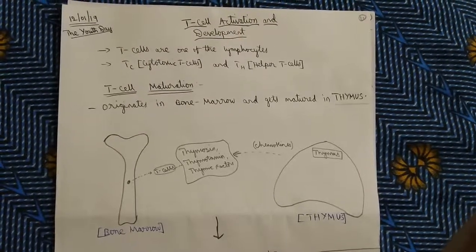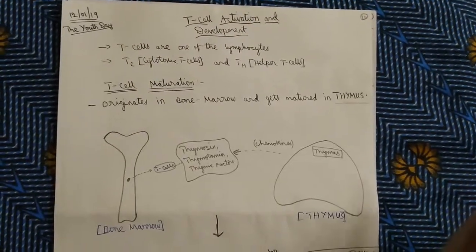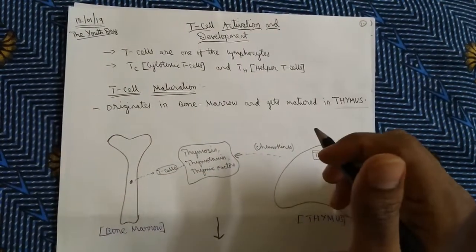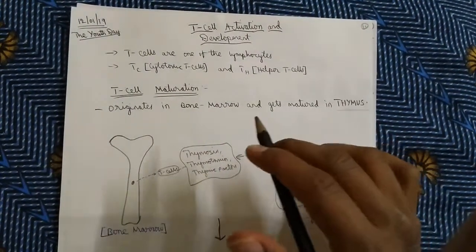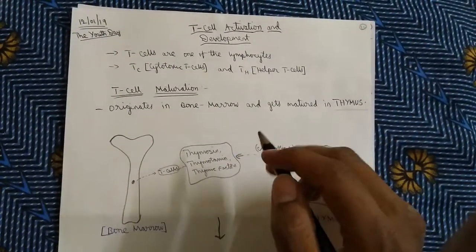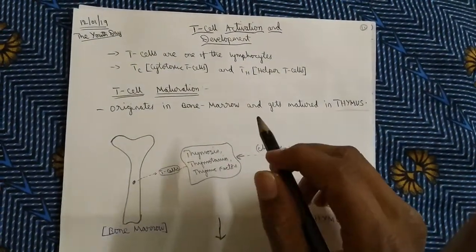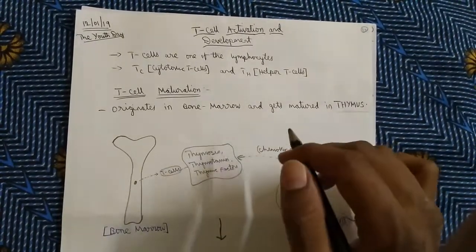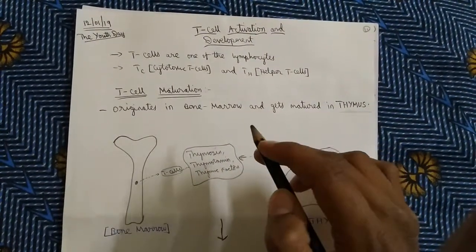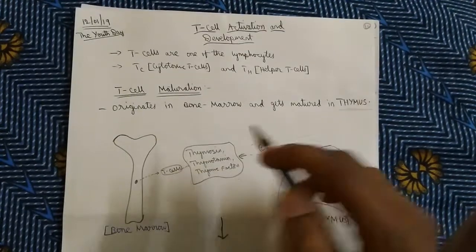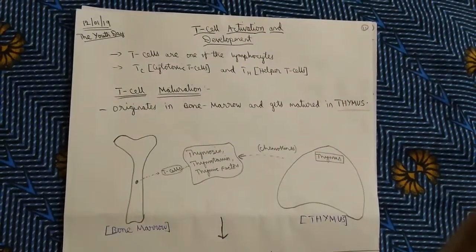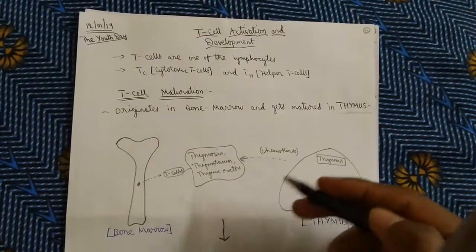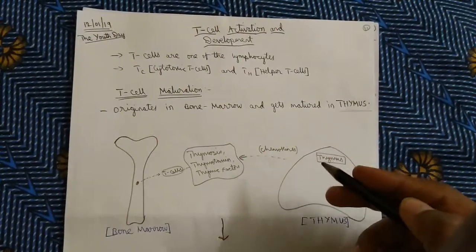Hello friends, how are you? Now we are going to discuss T-cell activation and development. What are lymphocytes? Lymphocytes are of three types: B-cells, T-cells, and natural killer cells. We are going to focus only on T-cells — how they are activated, how they are developed, and how they are matured.